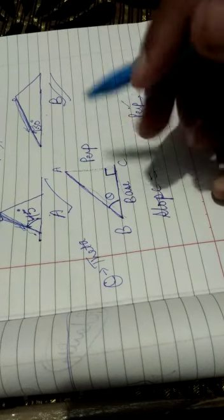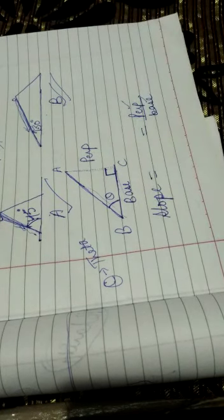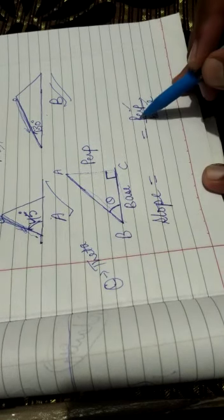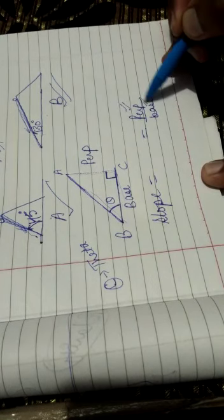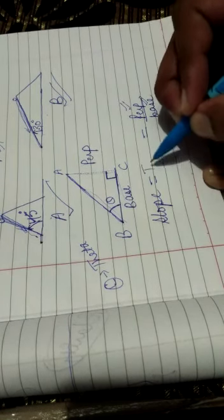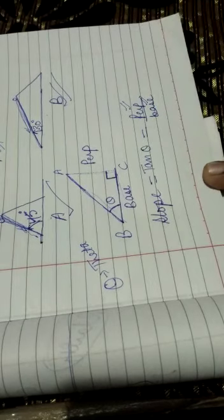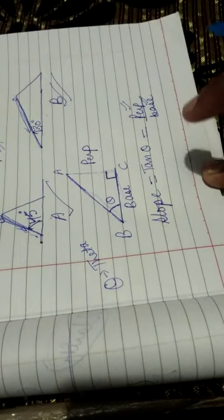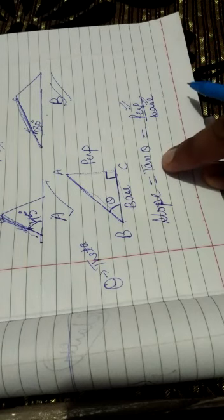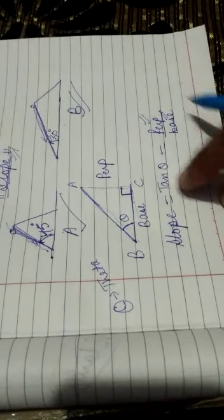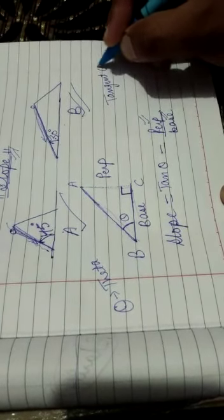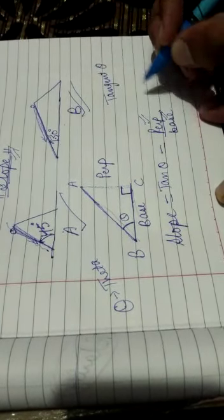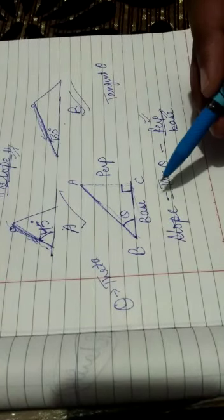In tenth class there will be one topic in mathematics called trigonometry. In that trigonometry you will find that perpendicular upon base is tan theta. Now this is a trigonometry term. Its full form is tangent theta, but in maths we take only the short form, that is tan.